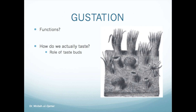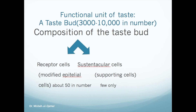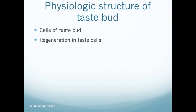A taste bud, which is the functional unit of taste sensation, is composed of receptor cells — modified epithelial cells about 50 in number. There are only a few sustentacular cells, which are supporting in nature. Many sensory nerve fibers are intertwined among the cell bodies.